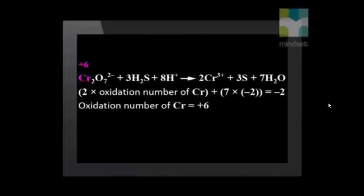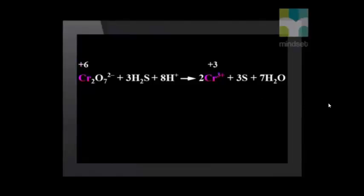Let's analyze this equation. We can calculate that the chromium atom in the dichromate ion has an oxidation number of plus 6, while on the product side the chromium ion now has an oxidation number of plus 3. Since the oxidation number of the chromium ion has become less positive, it has gained electrons. Therefore, the chromium ion has been reduced.